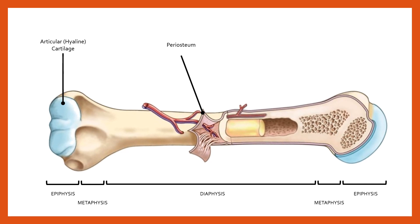Inside the periosteum, the next layer as we move toward the center is compact bone. This forms the outer hard shell of most bones in the body, and it's very prevalent in long bones because it provides rigidity, solidity, and strength. Long bones that bear body weight need a significant amount of compact bone, which is made dense and solid by minerals — particularly phosphorus and calcium — embedded within it.